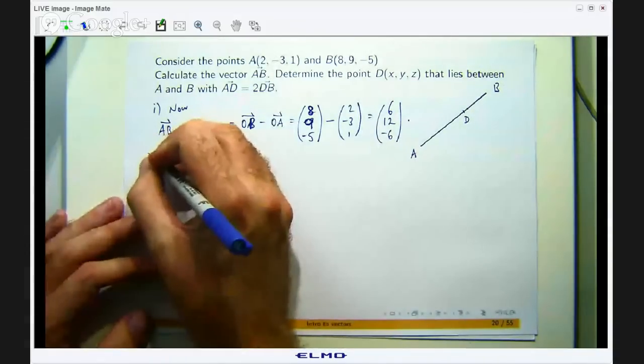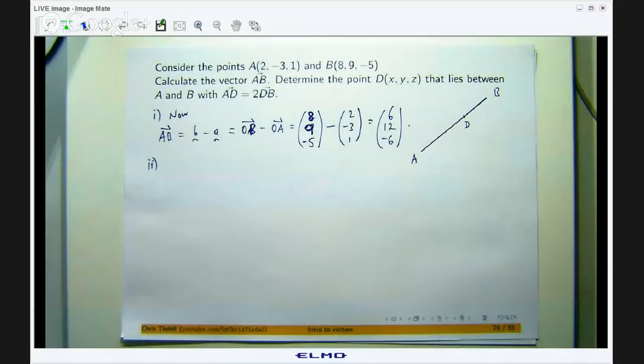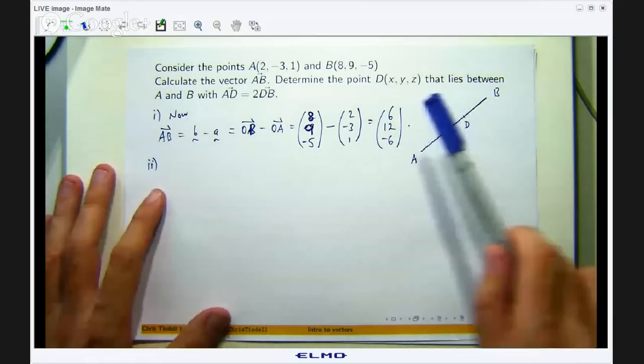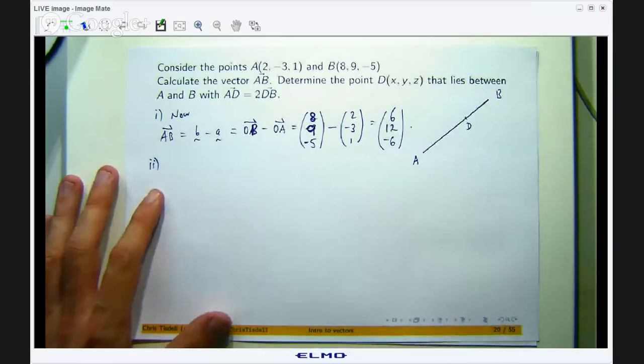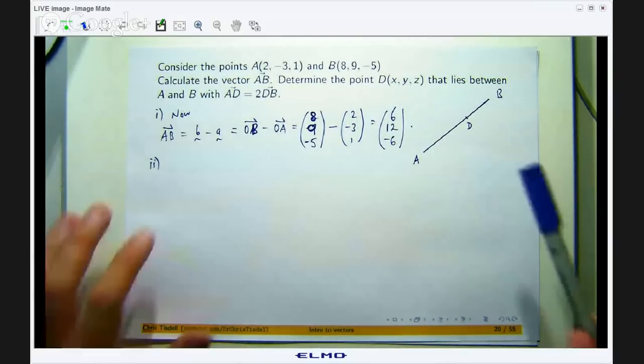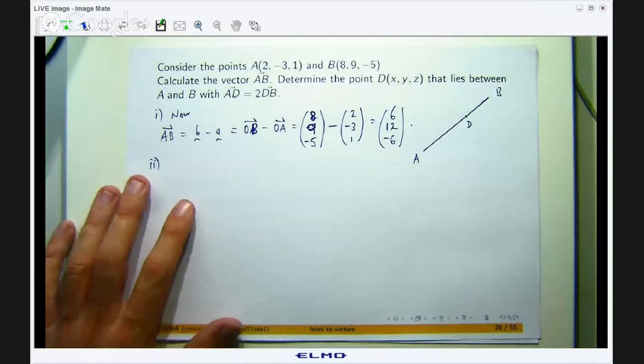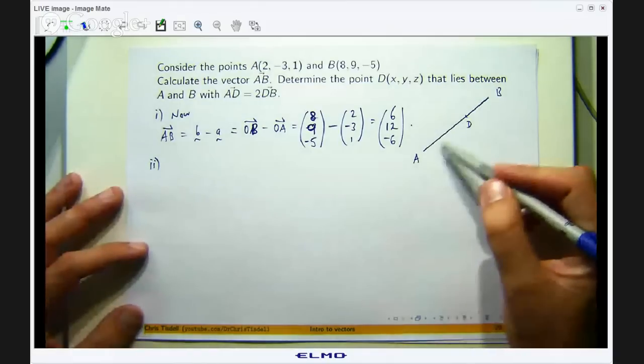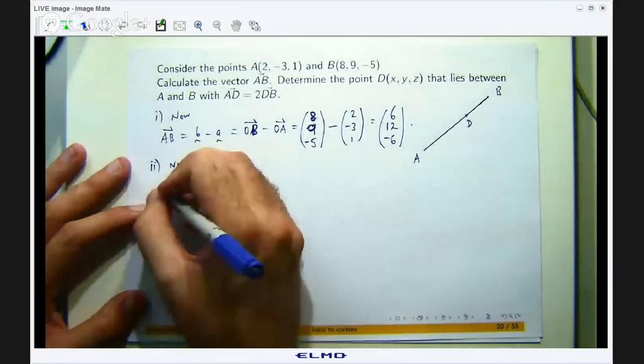Alright so the slightly tricky part of this example is determining the coordinates of this point D. Okay so how do we do it? Well there is probably a number of ways of doing it but we basically want the vector AD to be 2 thirds of the vector AB. Okay alright so let us work out the vector AD. We do not know what X, Y, and Z is but that is what we want to determine. And that is how I am going to solve this, the second part of this problem.